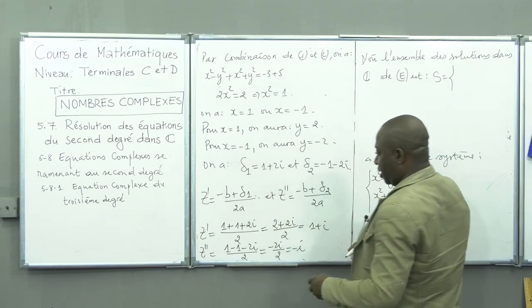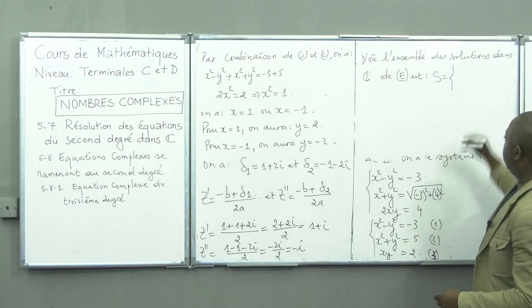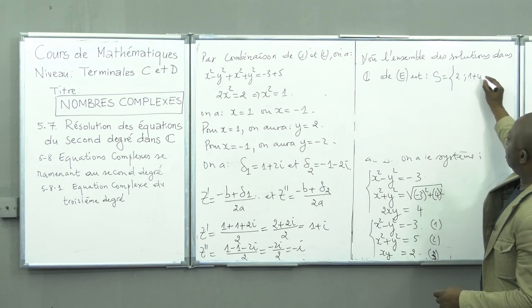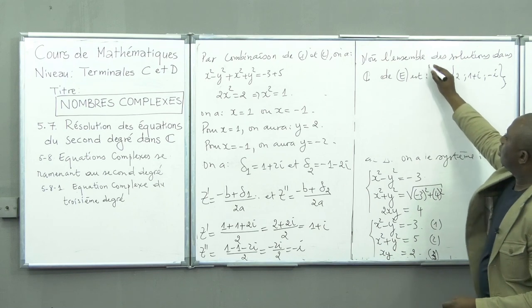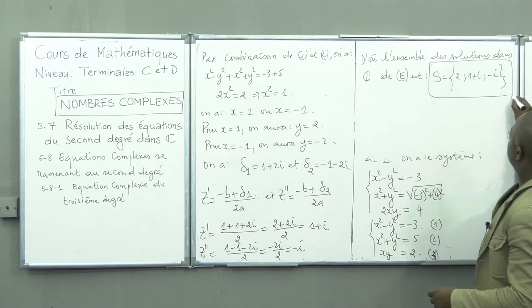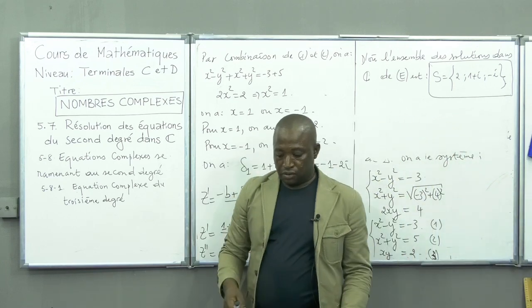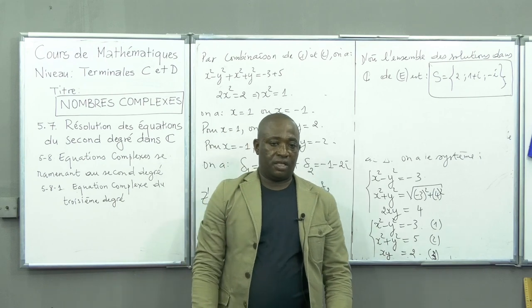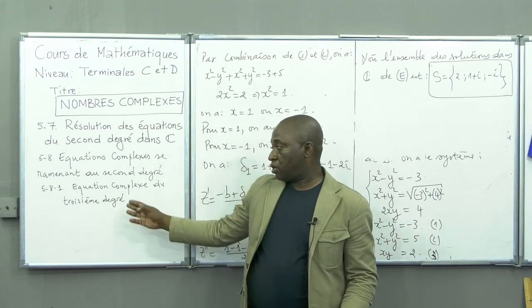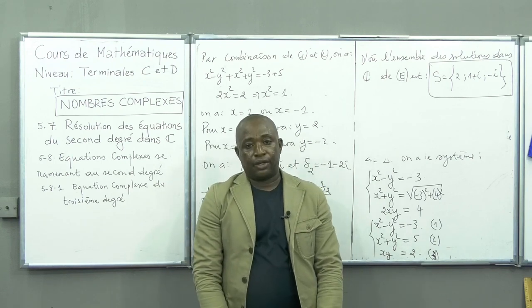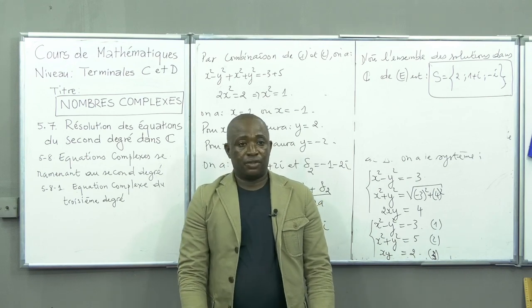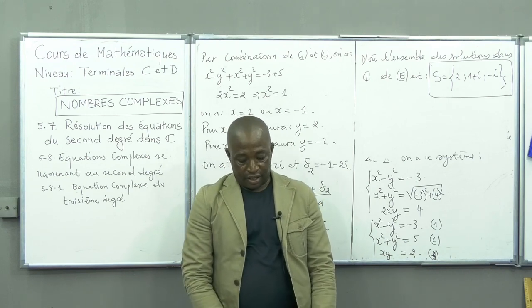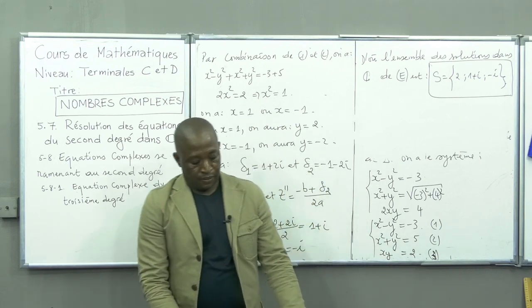L'ensemble des solutions dans ℂ de E est S = {2 ; 1+i ; -i}. Nous venons d'achever notre cours de ce matin concernant la résolution des équations du second degré et du troisième degré. Le prochain cours continuera avec les équations du troisième degré et les équations du quatrième degré. Merci beaucoup et au revoir.